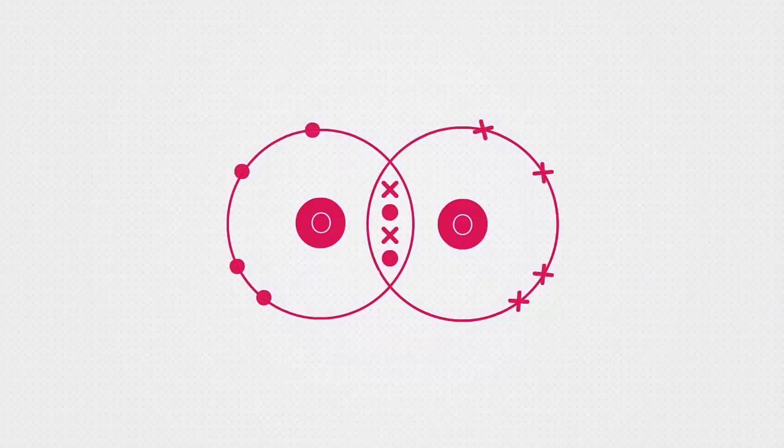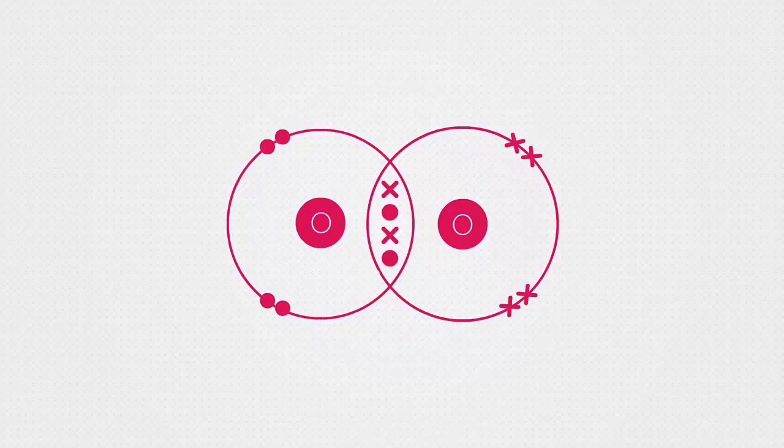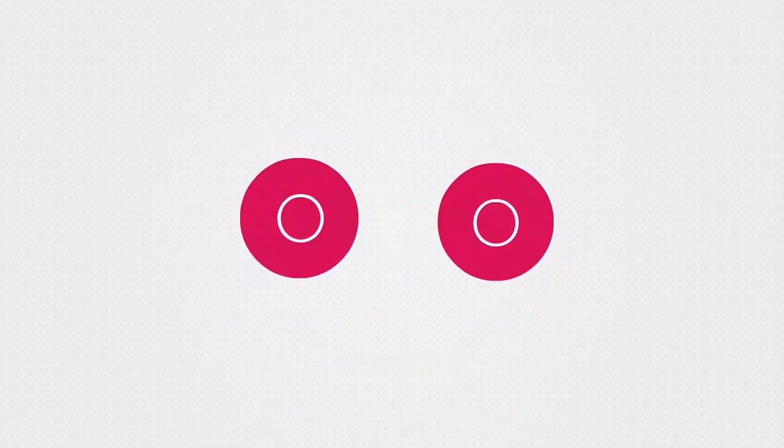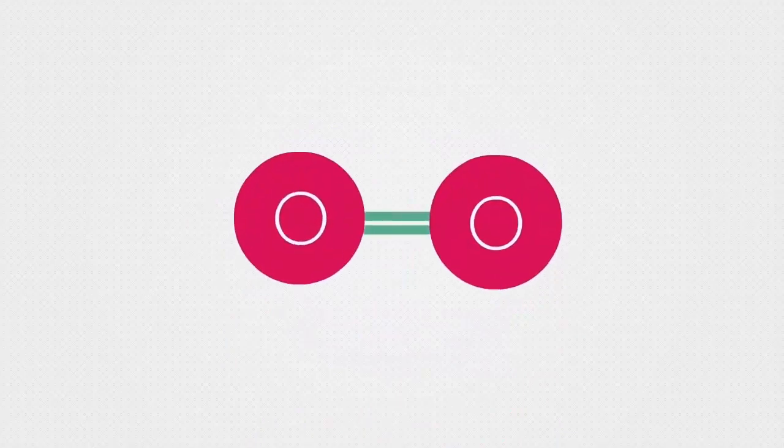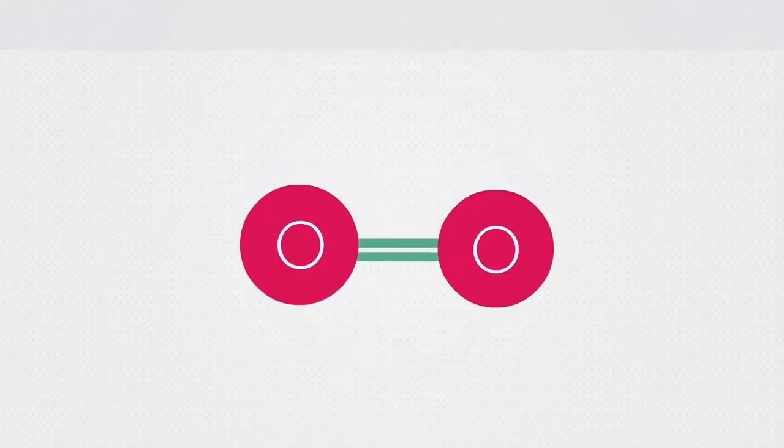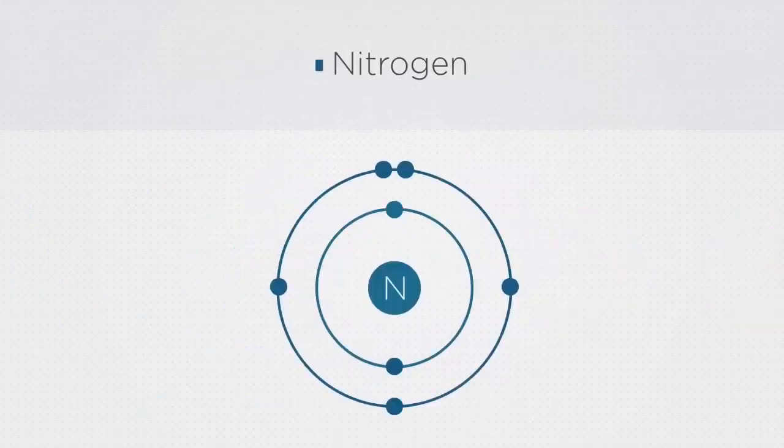The fact there are two shared pairs of electrons in the middle where the shells overlap means that the oxygen molecule O2 has two covalent bonds connecting each oxygen atom. This is called a double bond. Each of the nitrogen atoms has five electrons in their outer shells.